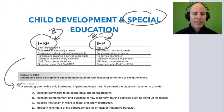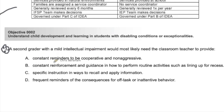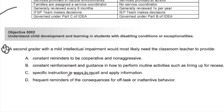Let's read over number three. It says: a second grader with a mild intellectual impairment would most likely need the classroom teacher to provide — A) constant reminders to be cooperative and non-aggressive; B) constant reinforcement and guidance in how to perform routine activities such as lining up for recess; C) specific instruction in ways to recall and apply information; D) frequent reminders of the consequences of off-task or inactive behavior.